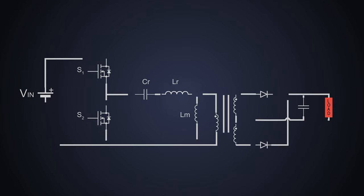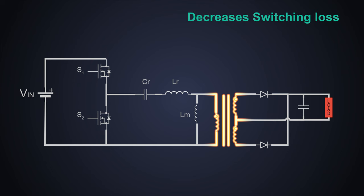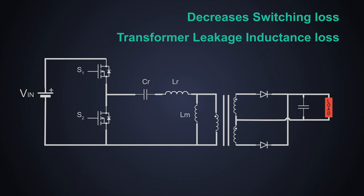Soft switching is used in high-frequency power converters. It decreases switching loss, transformer leakage inductance loss, diode recovery loss, and noise radiated from the converter.